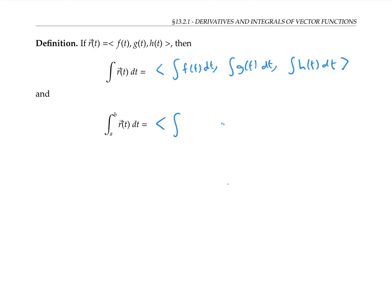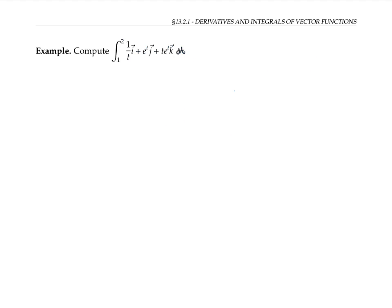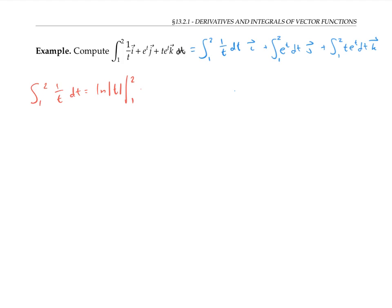Definite integrals also work just like you'd expect. For example, let's compute the integral from one to two of this vector valued function. We know that we can do this by computing the integral of each component separately. The integral from one to two of 1/t dt is ln|t| evaluated between one and two, that's ln two minus ln one, or just ln two. For the second integral, the integral from one to two of e to the t dt is e to the t evaluated between one and two, so that's e squared minus e.